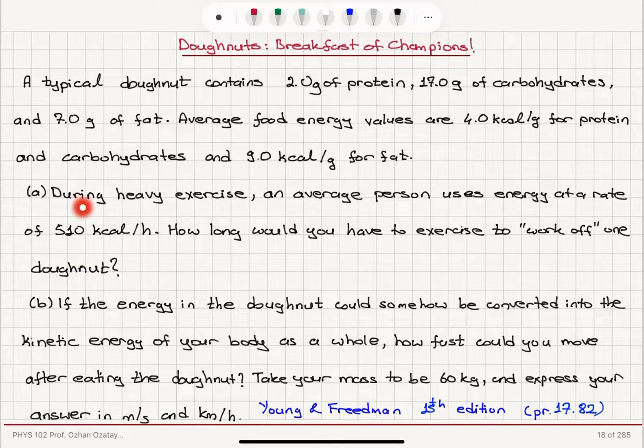Part A: During heavy exercise, an average person uses energy at a rate of 510 kilocalories per hour. How long would you have to exercise to work off one donut?